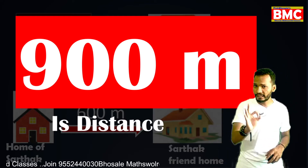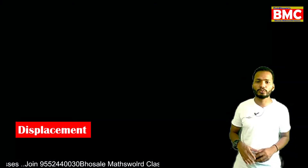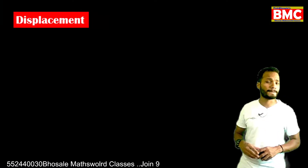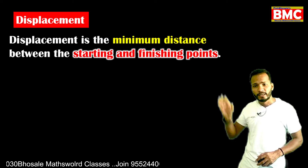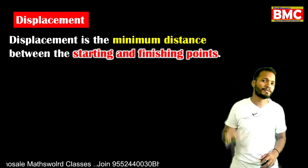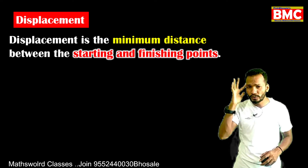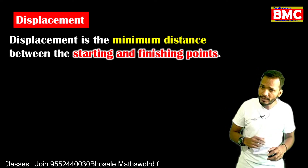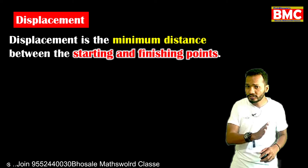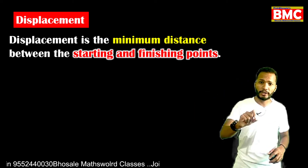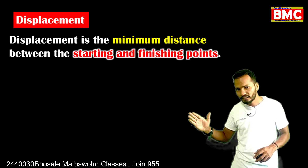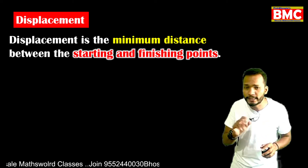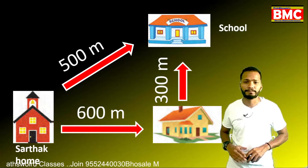So distance is the length of the actual path. Now we move on to displacement. What is displacement? Displacement is the minimum distance between the starting and finishing point. Minimum means the least possible — the minimum distance between the starting point and the ending point.